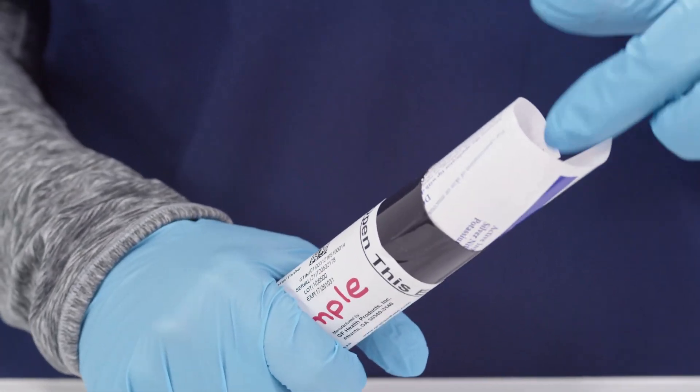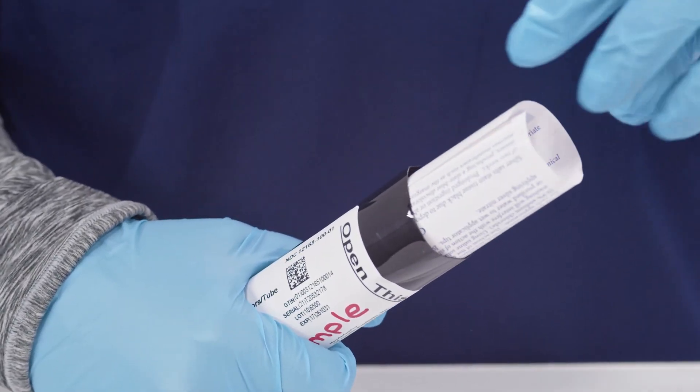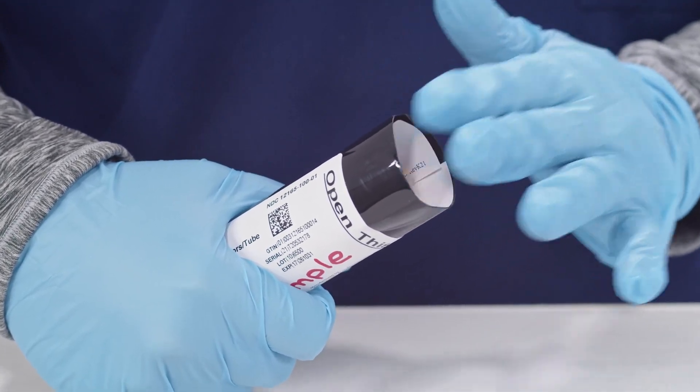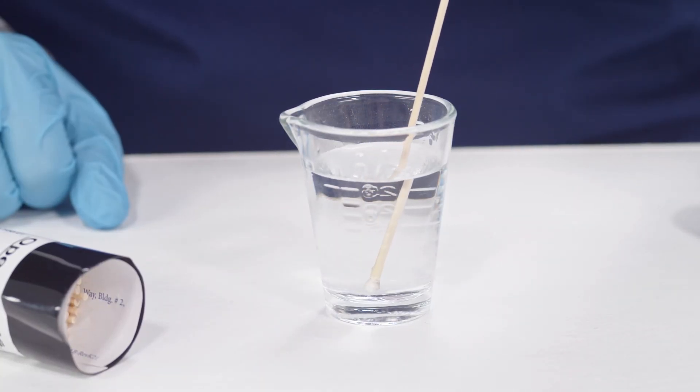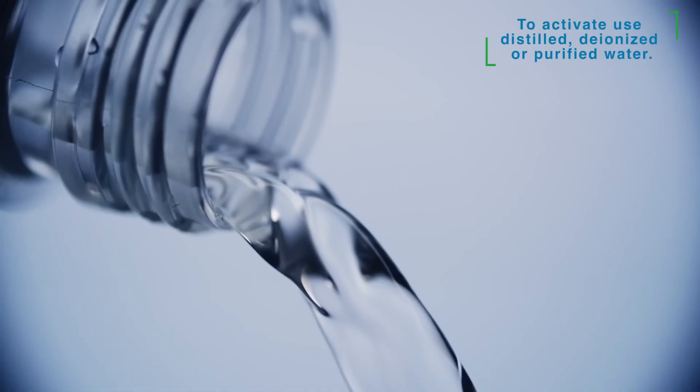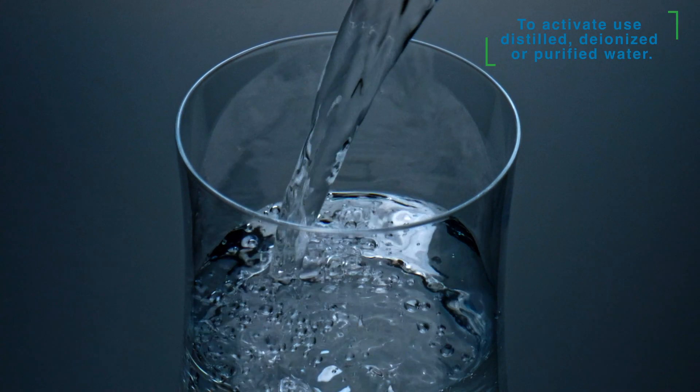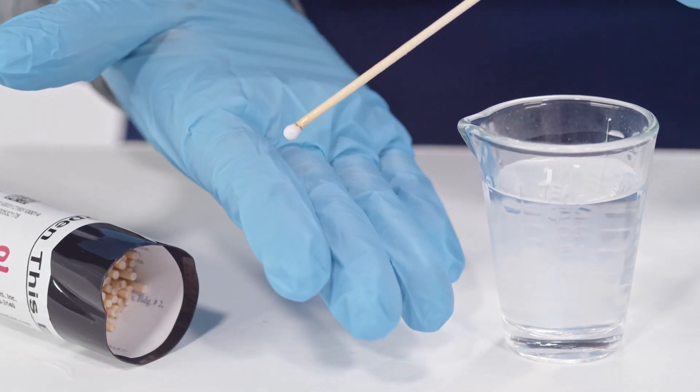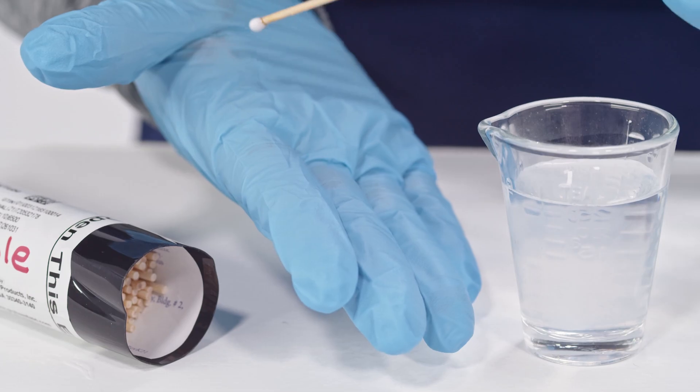Instructions can be found along the inside wall with the applicators in the tube. Moisten the applicator tip to activate silver nitrate. Only use distilled, deionized, or purified water to wet applicator tips. Once it's wet, the medication is activated and can be applied to the affected area.